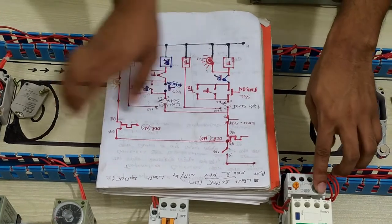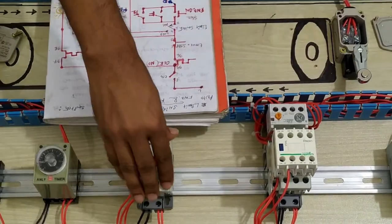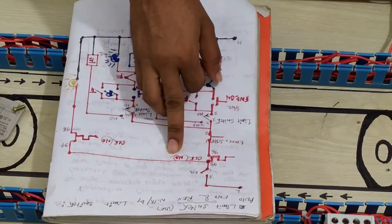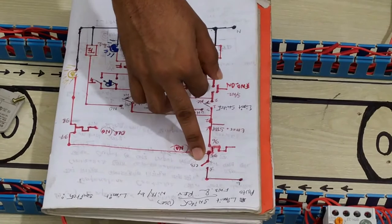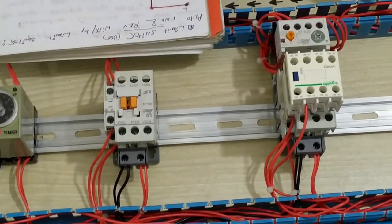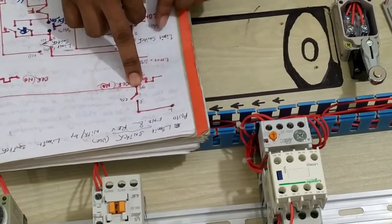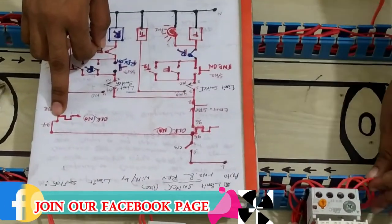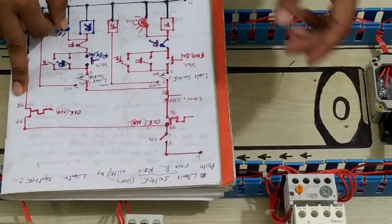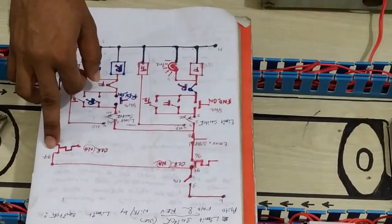These two terminals are directly connected to pin 95 of the overload. This overload is connected to your forward magnetic contactor and your reverse magnetic contactor. Pins 95 and 96 of the overload are normally closed (NC). That means when power is supplied, it is directly connected — phase only — to pin 95 of the overload, with pin 96 as the outgoing. Pin 95 is also directly connected to pin 97.